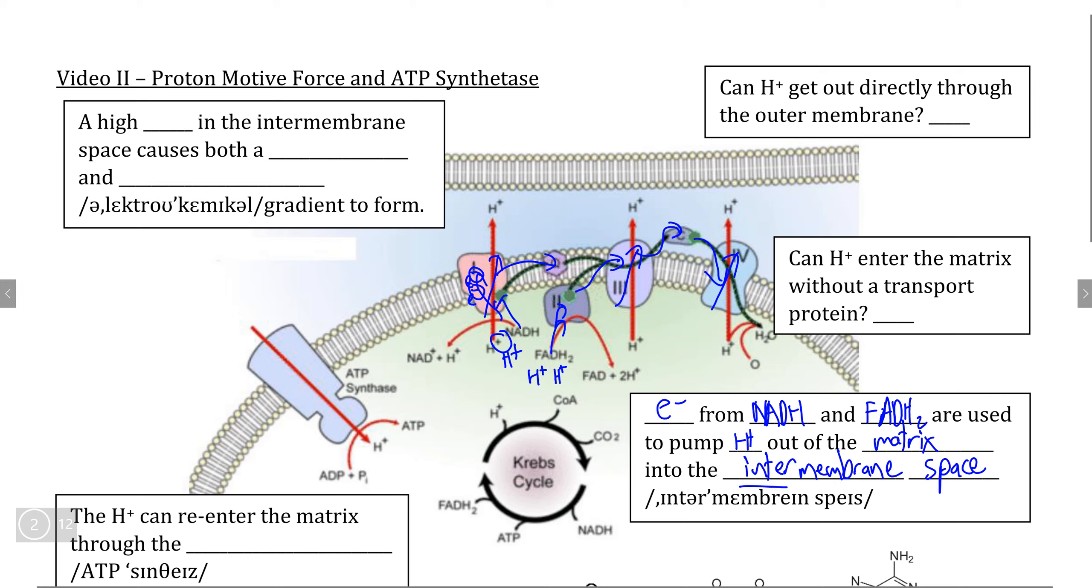This is critical because as the concentration of H plus inside of the mitochondrion or inside of the matrix decreases, we are creating a hypotonic situation where our solute concentration, the concentration of H plus is low, while simultaneously creating a high concentration of H plus that exists in the intermembrane space,